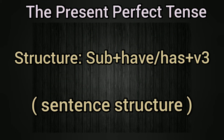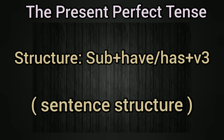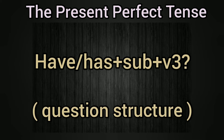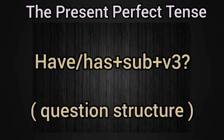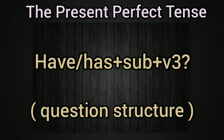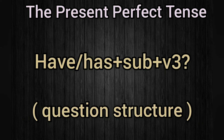The sentence structure in the present perfect tense is subject plus have or has plus V3. To make it a yes/no question, just invert the subject and the auxiliary verb. Then it becomes a yes/no question.